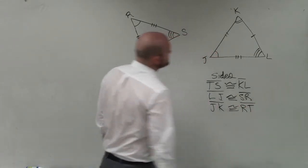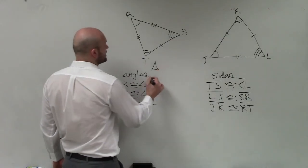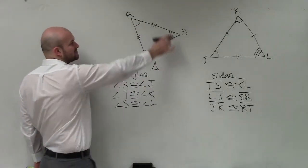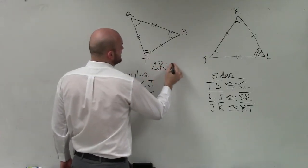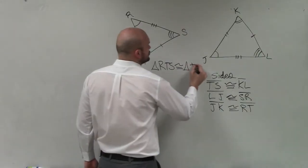And guys, there's multiple ways to say that these triangles are congruent. But if we want to do a final one, we'd say triangle. And I'll go in angles that are RTS is congruent to triangle JKL.